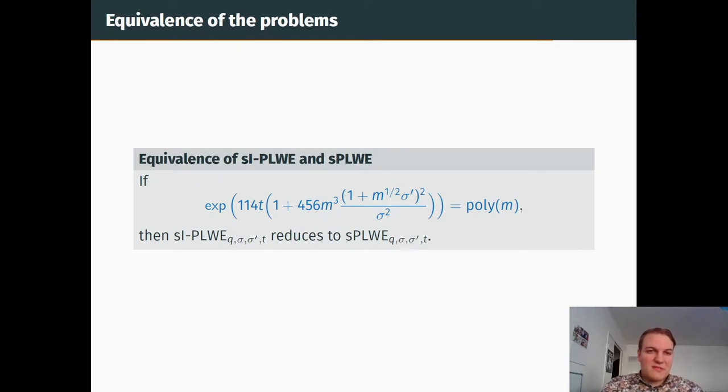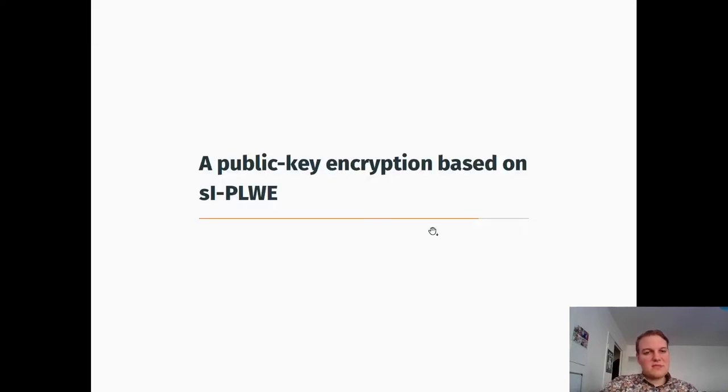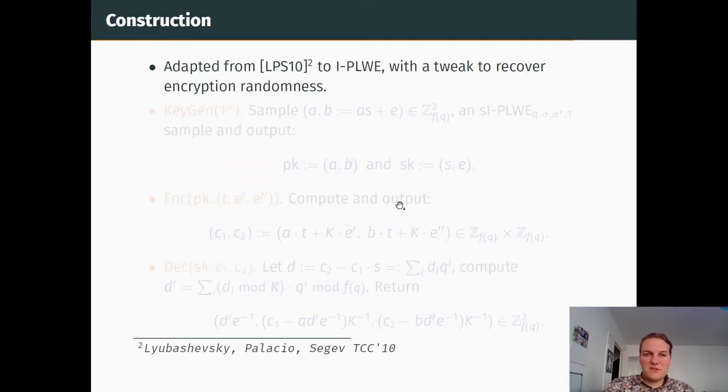From that, we also have the reverse reduction, and this gives us that both problems are actually equivalent without any kind of noise growth. That's pretty interesting, and from this we are able to propose a public key encryption based on the search version of integer polynomial learning with errors. It's adapted from an already existing scheme, but we use it with integer polynomial learning with errors, and we must add some tweak to recover the randomness used in the encryption.